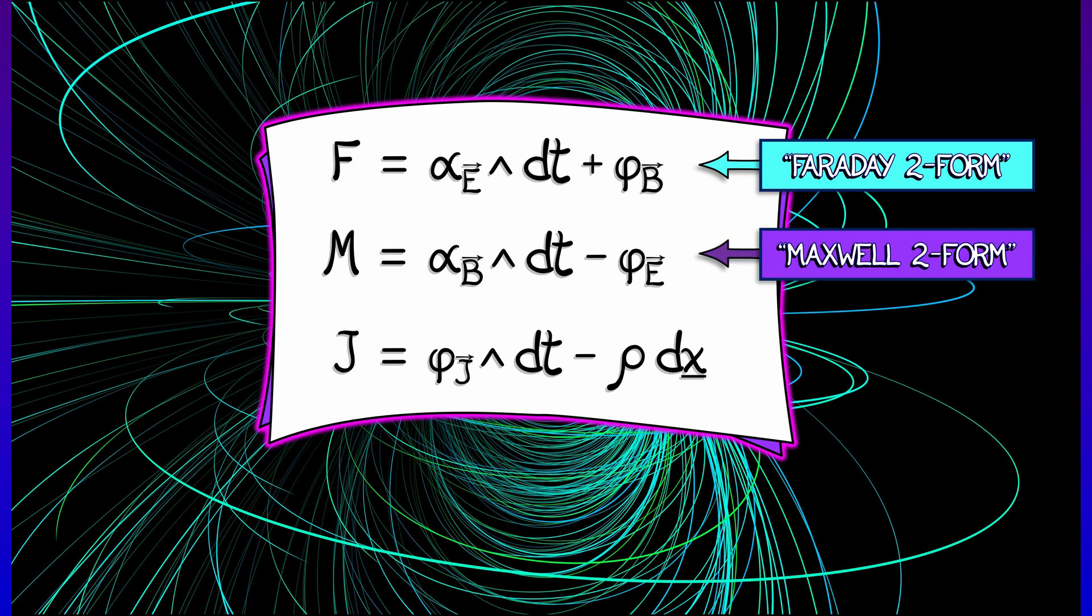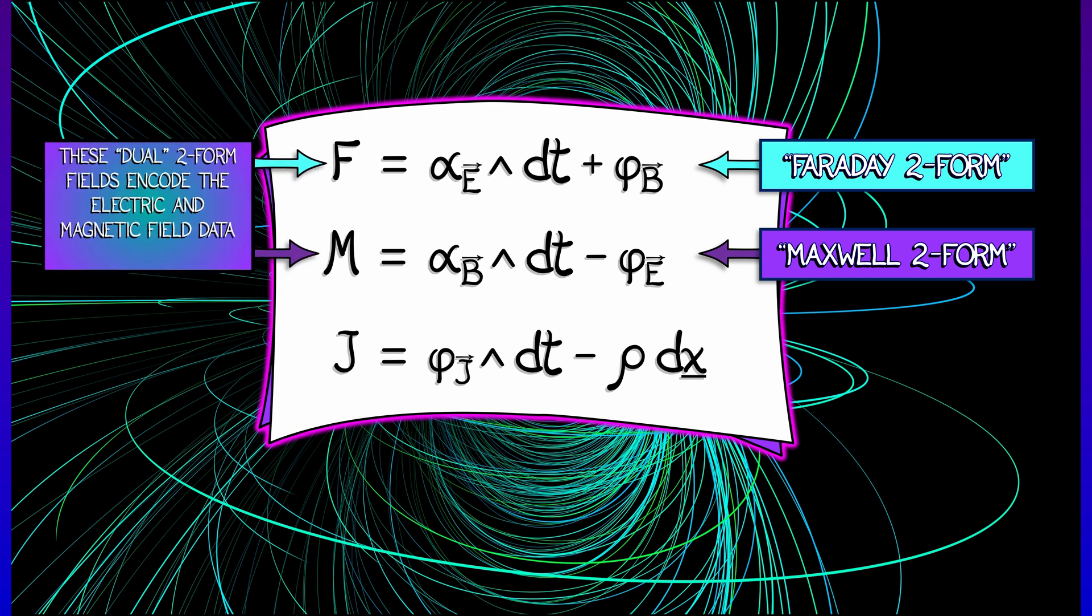In addition, there is the Maxwell two-form field, M, that is given by alpha-B wedge dt minus phi-sub-E. Now, notice how these are sort of symmetric. It's kind of like you're switching the E and the B, but then there's that minus sign that sort of twists everything up. These dual two-form fields are tying together the electric field, the magnetic field, space, and time. It's kind of cosmic.